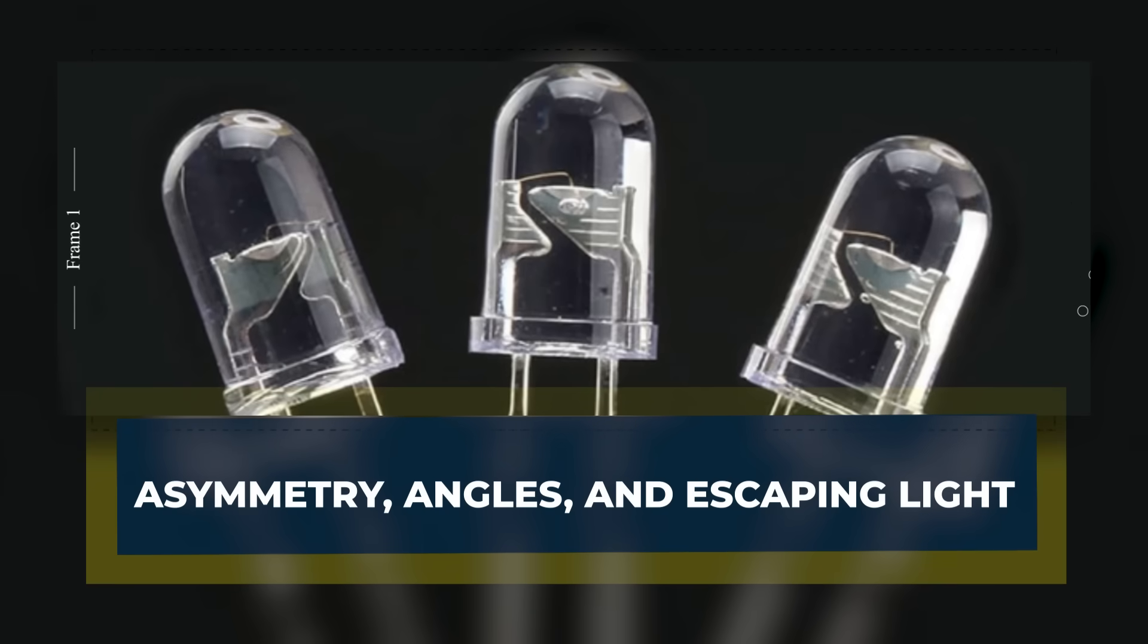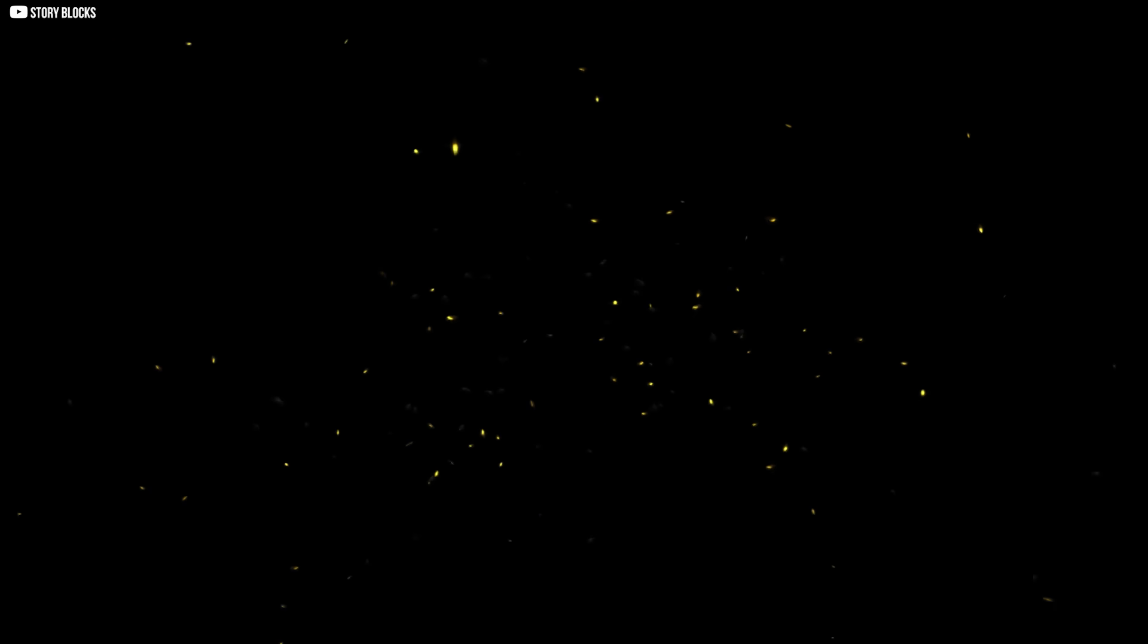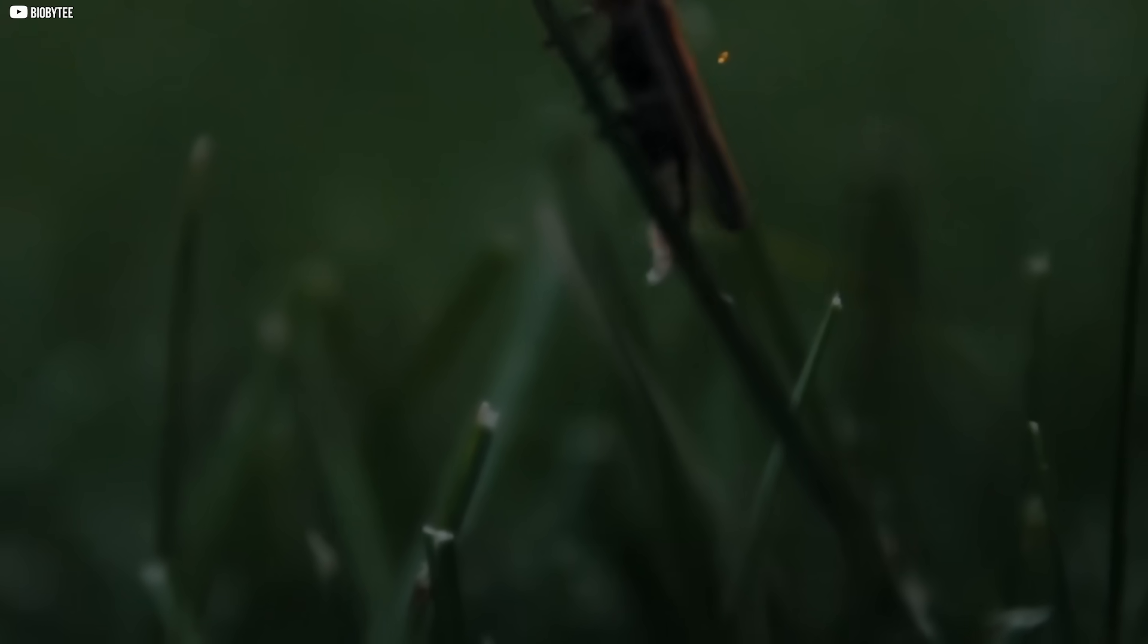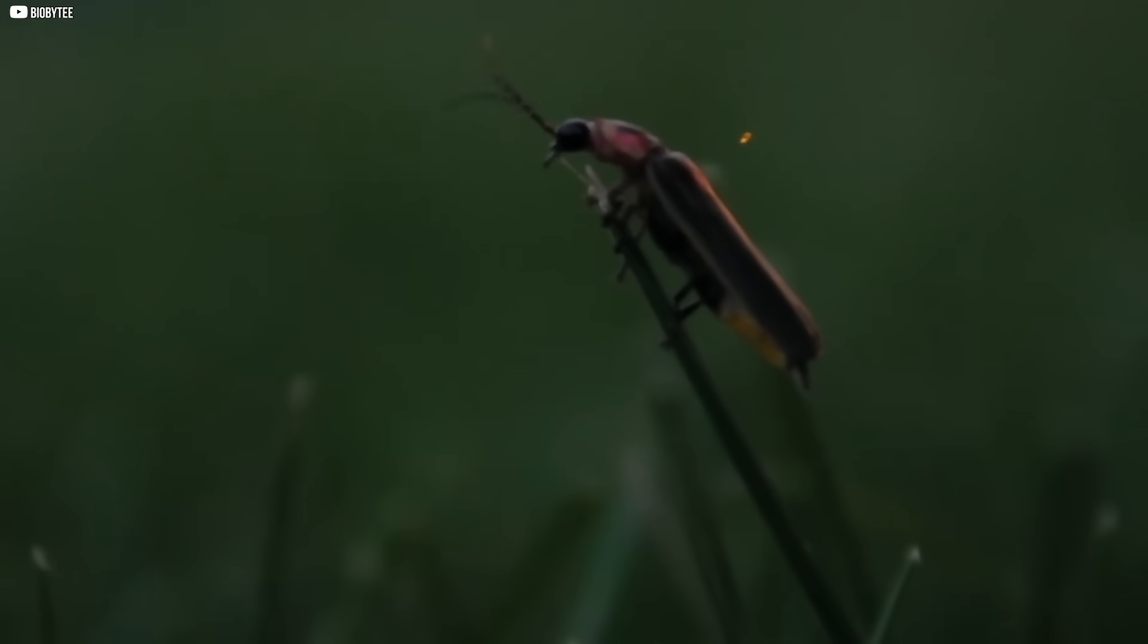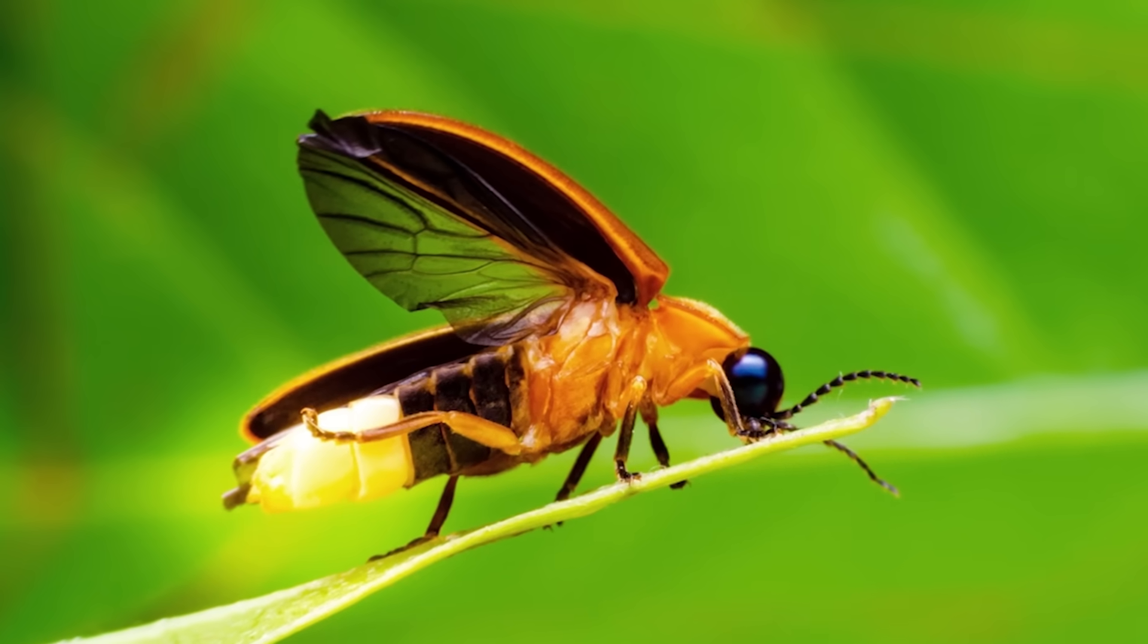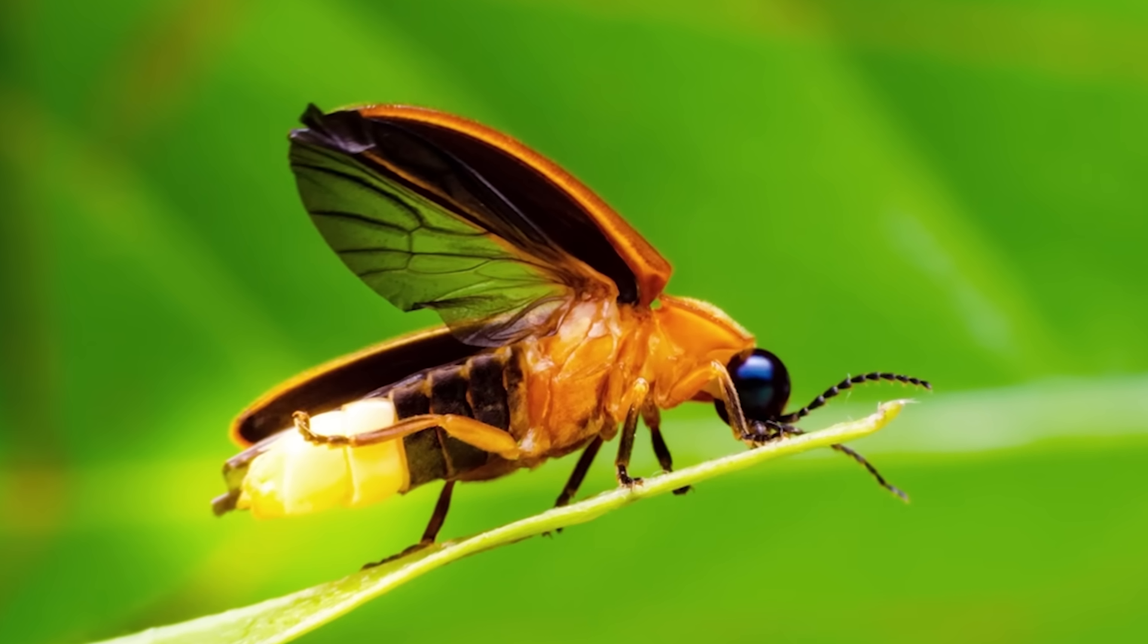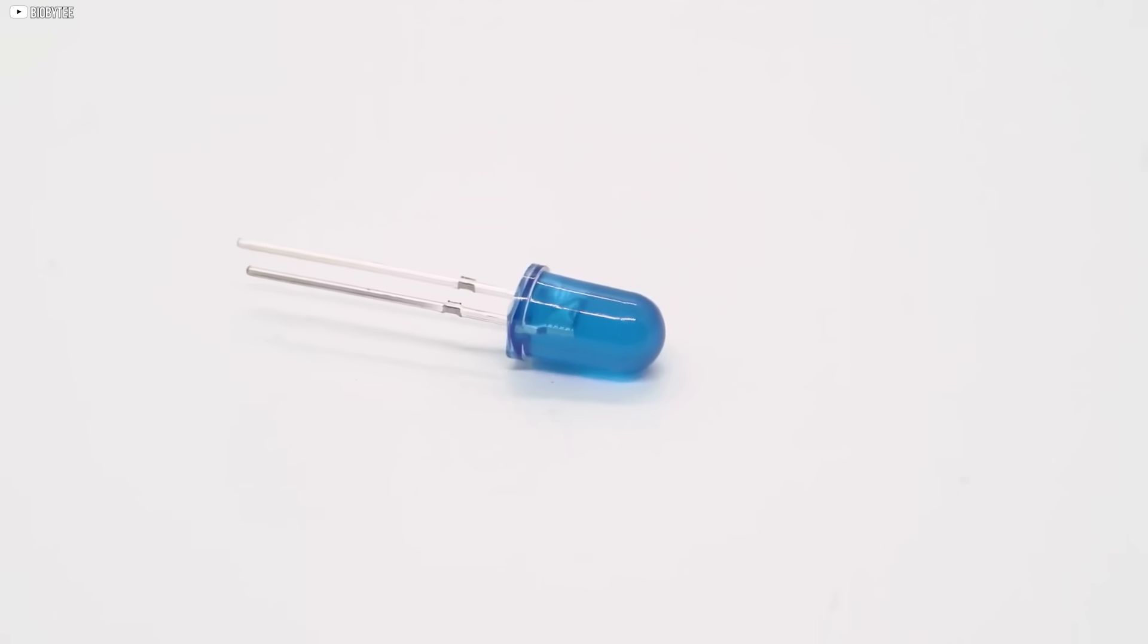Asymmetry, angles, and escaping light. The brilliance of the firefly's lantern lies in something surprisingly simple. Disorder. Not chaos, in the messy sense, but a purposeful lack of symmetry. Its jagged, uneven surfaces scatter light at unpredictable angles, giving each photon a better chance to escape. This randomness, it turns out, is exactly what LED technology has been missing.